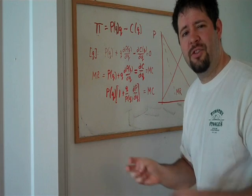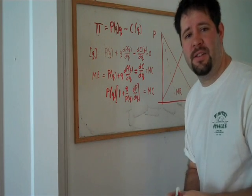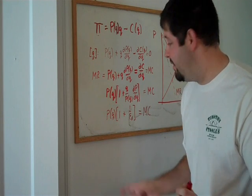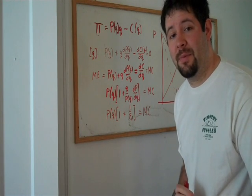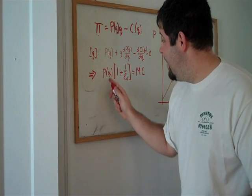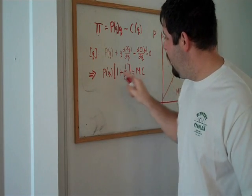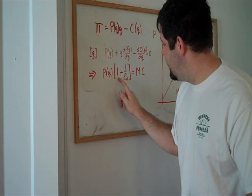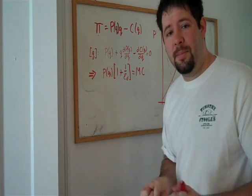This term is actually 1 over the elasticity of demand. So this is going to be the condition that the monopolist uses to find its profit maximizing quantity. Now, the first thing that this points out is that when we look at this, this form, this part here is our marginal revenue.